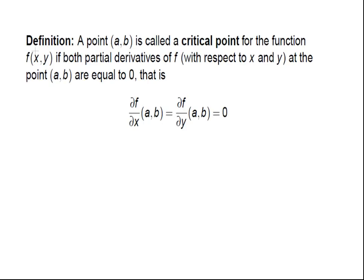A point (a,b) is called a critical point for the function f(x,y) if both partial derivatives of f (with respect to x and with respect to y) at the point (a,b) are equal to 0. So the partial derivative of f with respect to x and the partial derivative of f with respect to y at the point (a,b), if they're both equal to 0.